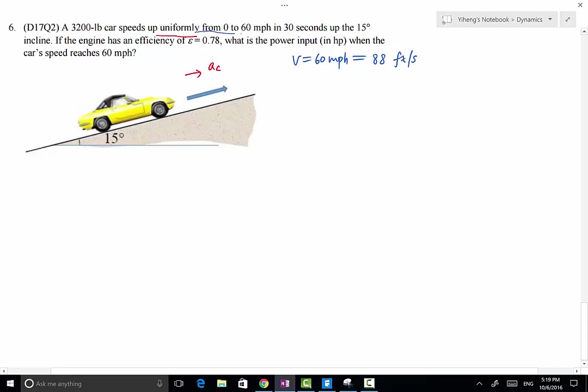And we know that the car gains that speed in 30 seconds uniformly, which means that V equals constant acceleration AC times T. In other words, AC equals V over T, which is 88 divided by 30 seconds, and that is 2.93 foot per second squared.